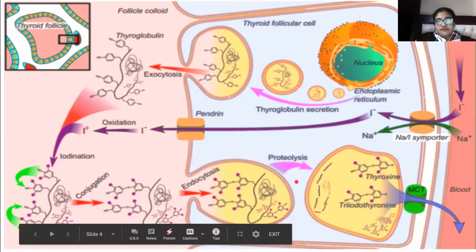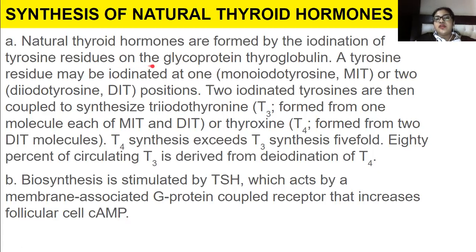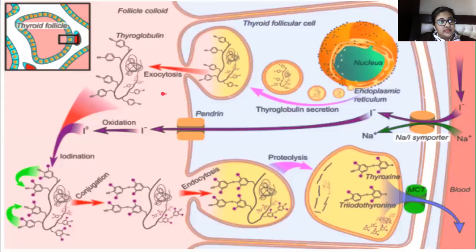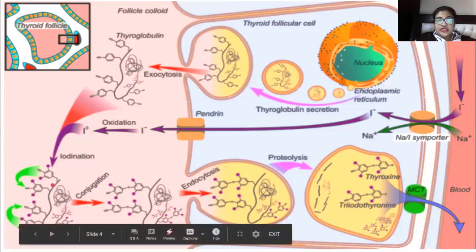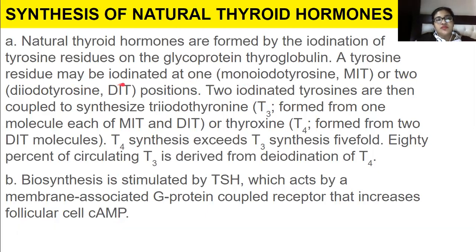Natural thyroid hormones are formed by iodination of tyrosine residues on the glycoprotein thyroglobulin. Thyroglobulin is present and tyrosine gets iodinated on top of it. A tyrosine residue may be iodinated at one position — monoiodotyrosine (MIT) — or two positions — diiodotyrosine (DIT).